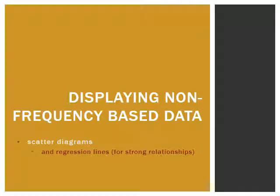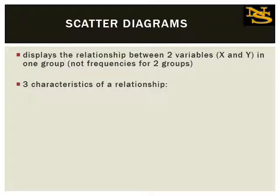Now let's shift focus from frequency distribution tables to scatter diagrams and regression lines. This is useful when looking at the relationship between two interval or ratio variables. If you see a strong relationship, you'd also create a regression line to make predictions about population values based on sample data. A scatter diagram displays the relationship between two variables typically labeled x and y. Note that in the data table, the x column represents values of the first variable and y represents values of the second variable — not frequencies.